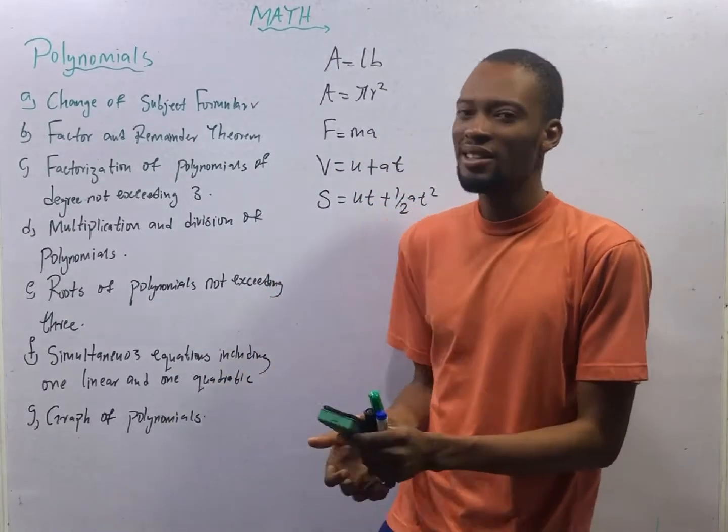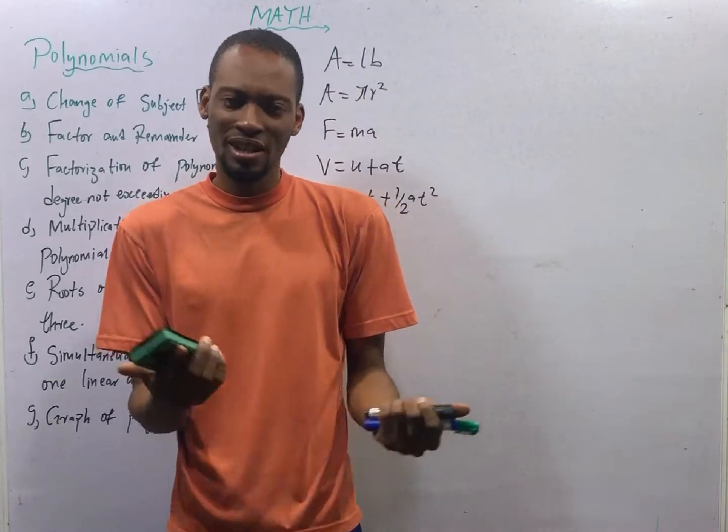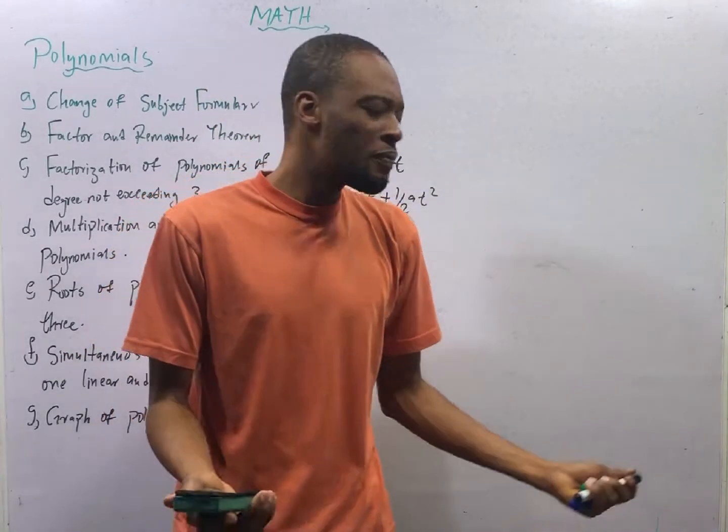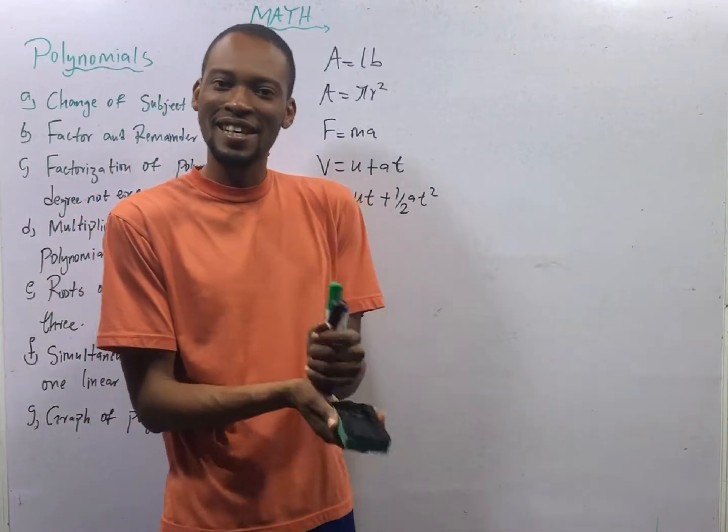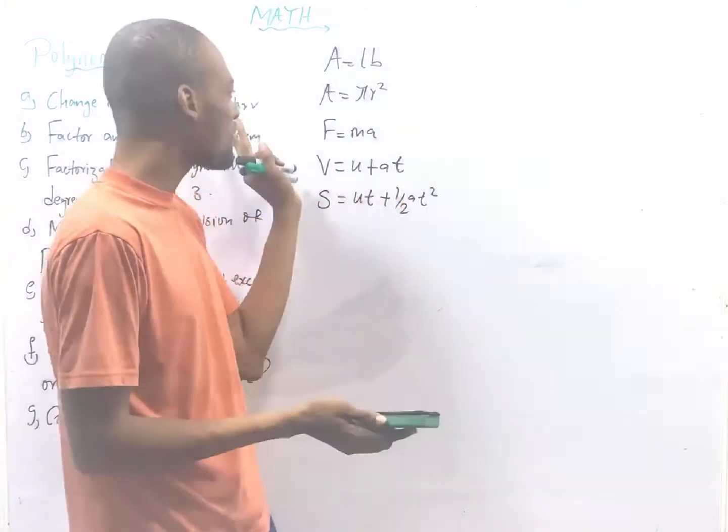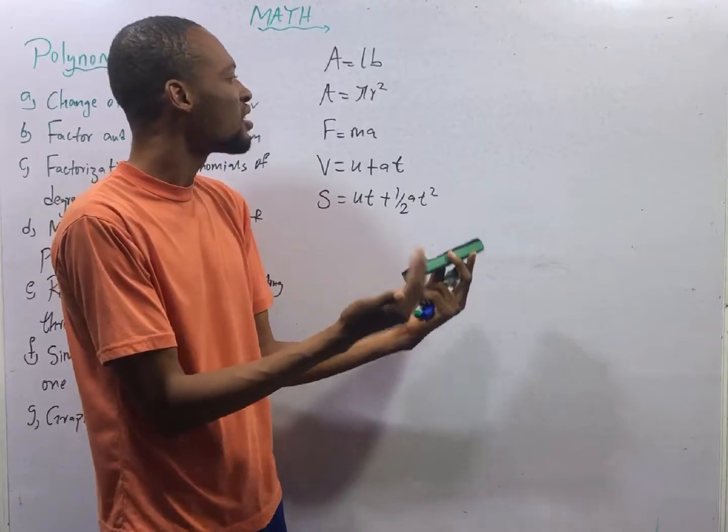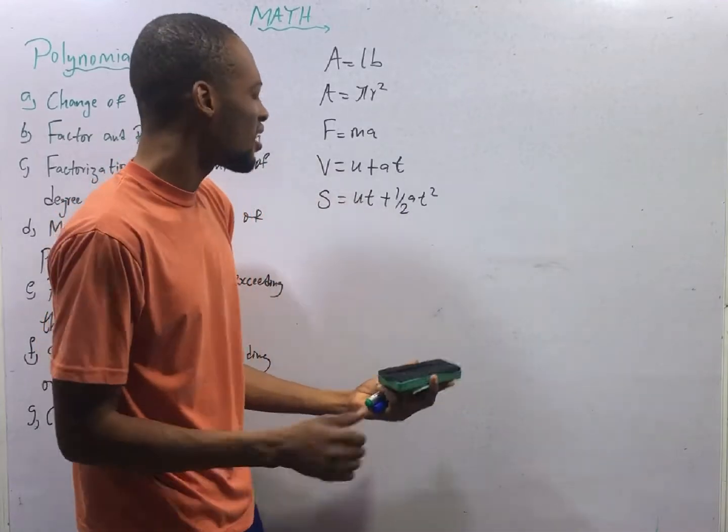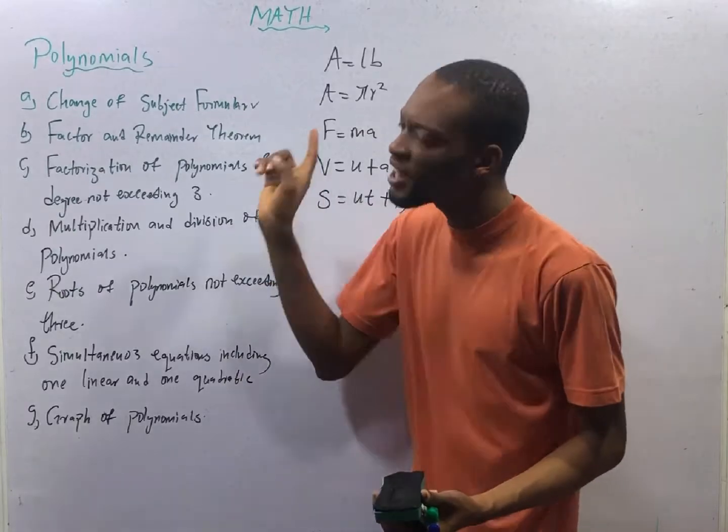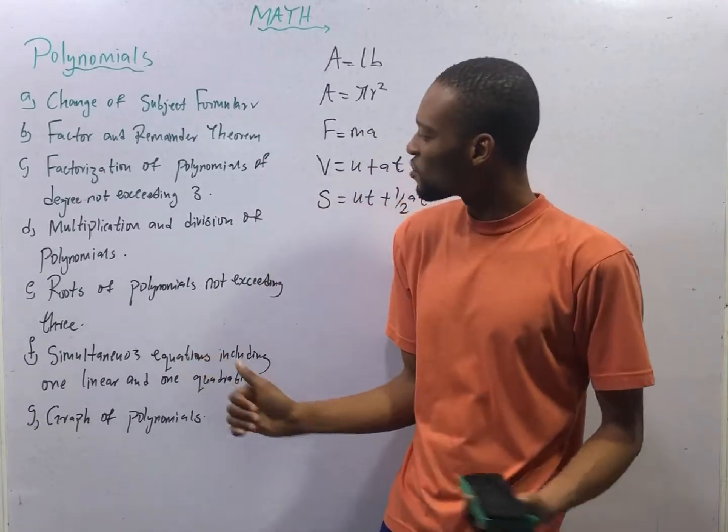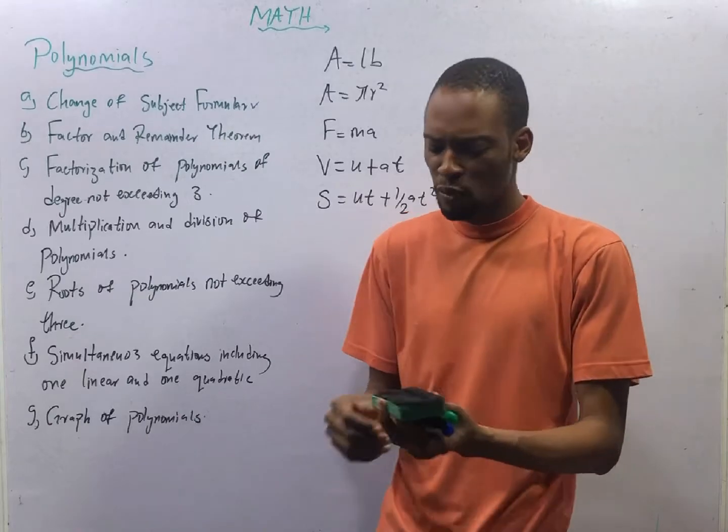This is episode number 28 of the 120 Days to JAMB Mathematics with Flash Isaac. Welcome back to Change of Subject Formula. In the previous episode, we agreed that subject formula is a variable, usually at the left, that every other thing equates to, and rearranging the subject formula so that another variable becomes the subject is referred to as Change of Subject Formula.